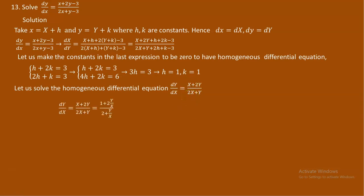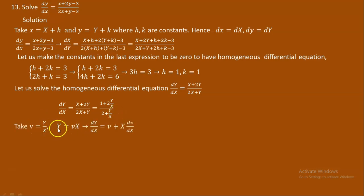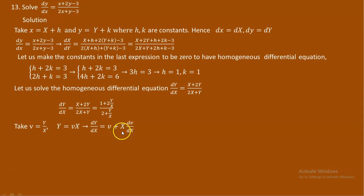Introduce v to be Y over X. Dividing both sides by X, we get 1 plus 2(Y over X) over 2 plus (Y over X). Let v equal Y over X, so Y equals v times X. Taking the derivative with respect to X using the product rule, dY over dX equals v plus X times dv over dX.